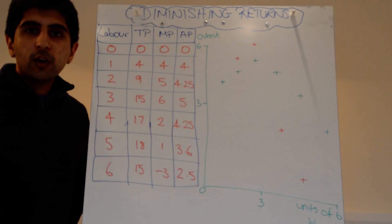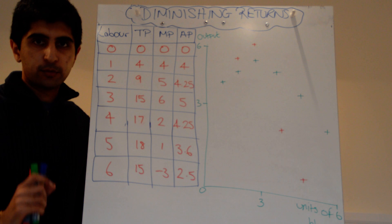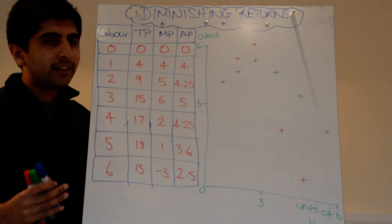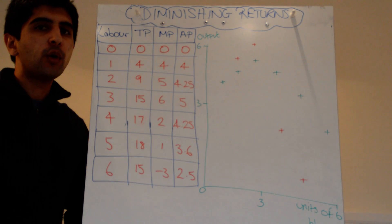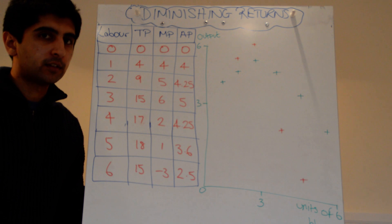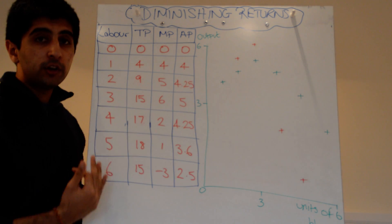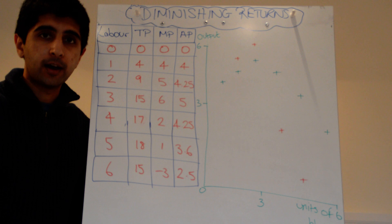Hello everybody. We are going to look at short run cost curves for a firm, but to do that we need to understand the law of diminishing marginal returns. That can help us explain why short run cost curves are shaped as they are.